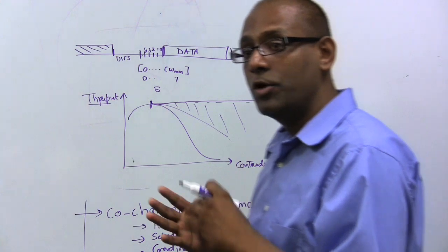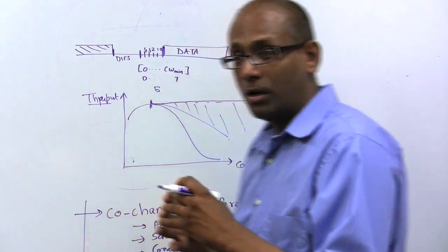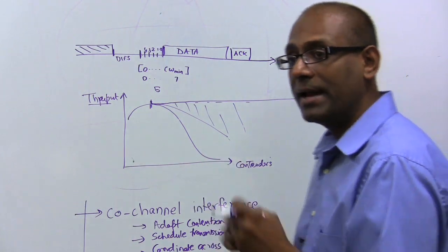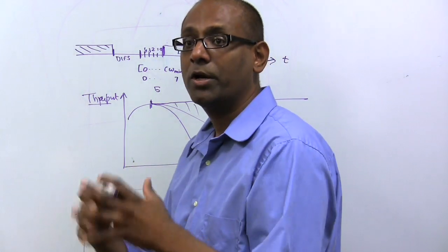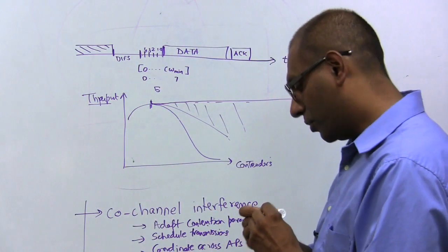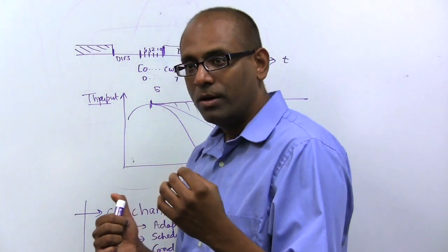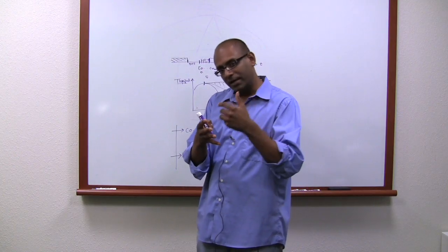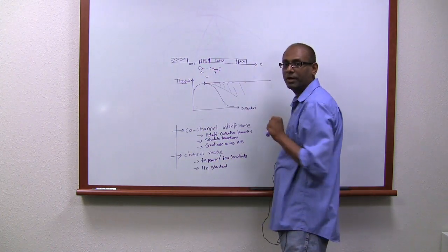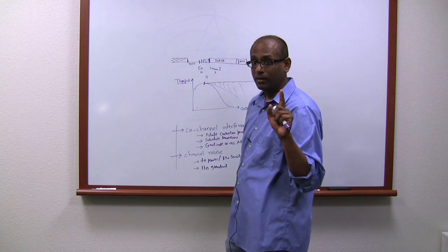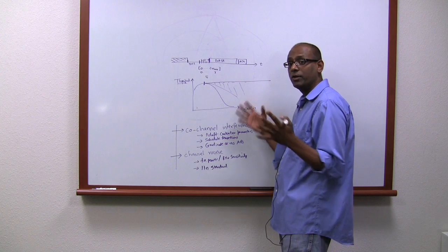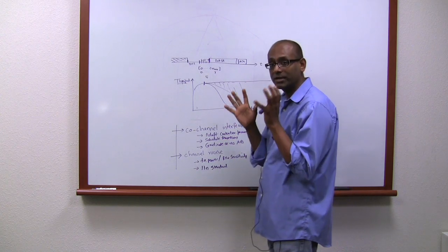And the 802.11 WMM standard actually allows you the provisions to come up with these sorts of contention window values and advertise them from an access point to all the clients connected to it. Now, the value here is the following. 802.11 WMM is a framework. It tells you in the beacons very specific information elements where you can, in fact, figure out how to advertise this contention value. It doesn't tell you what the value should be. That's meant for different vendors to innovate and figure out. But it does provide you the basic capabilities of the infrastructure to advertise these values.